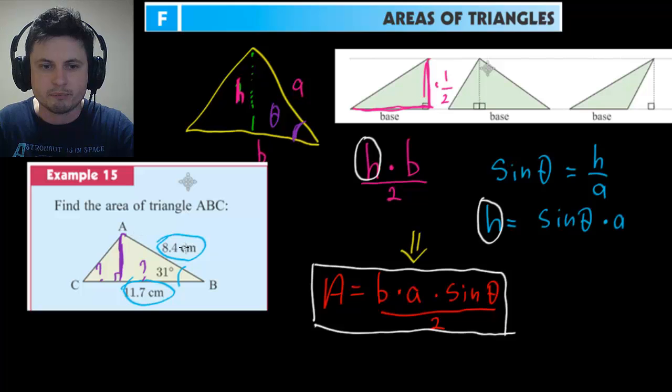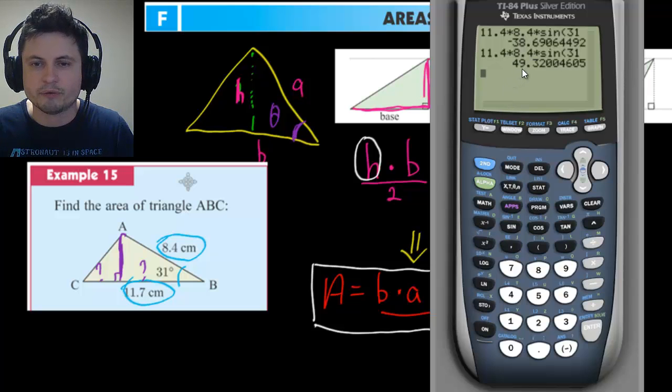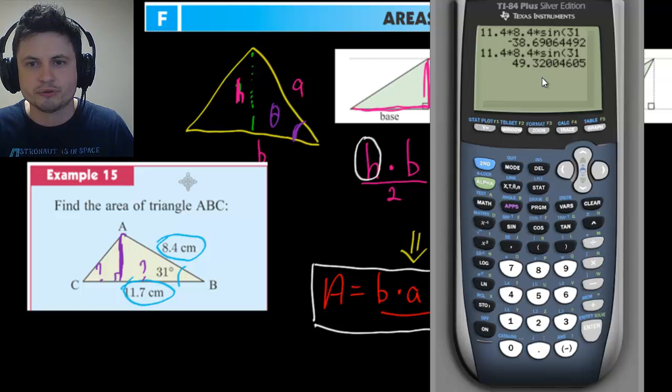You have to use the non-traditional way, which is by using the product of these two sides, divide them by two, and multiply by sine of 31. And what do you get? What you get is 49.3 centimeters squared. If you multiply these two sides by sine of 31, you'll get 49.3 square centimeters. And essentially this is how you would do these types of questions.